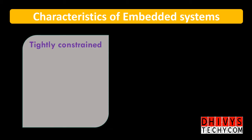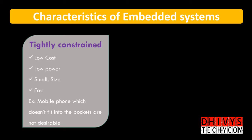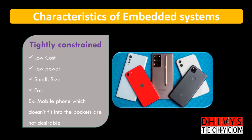The second category of characteristics is tightly constrained. If there is low cost, low power, size, and faster value, there are many expectations. A mobile phone is a tightly constrained device. When you have tightly constrained parameters — like low cost, low power, size, and the ability of fastness — these are the tightly constrained characteristics.